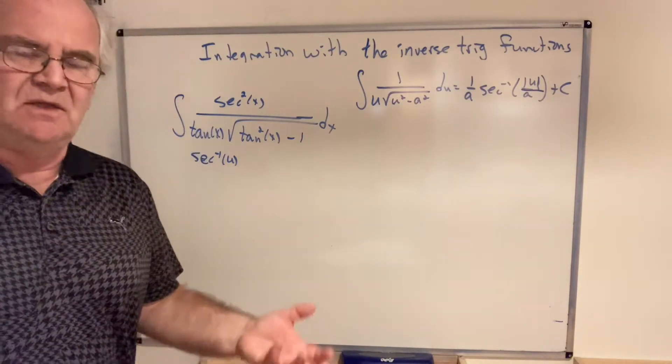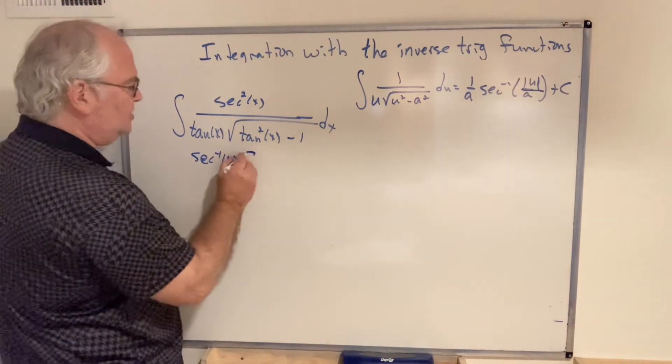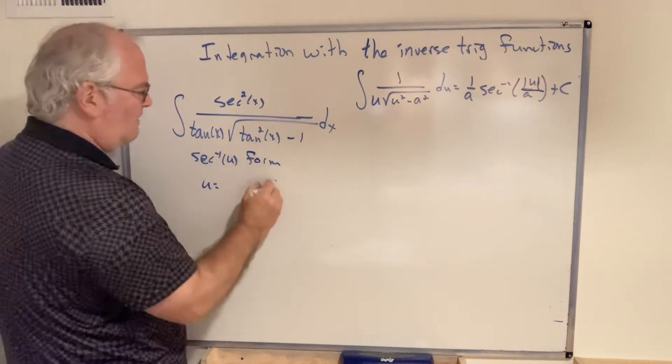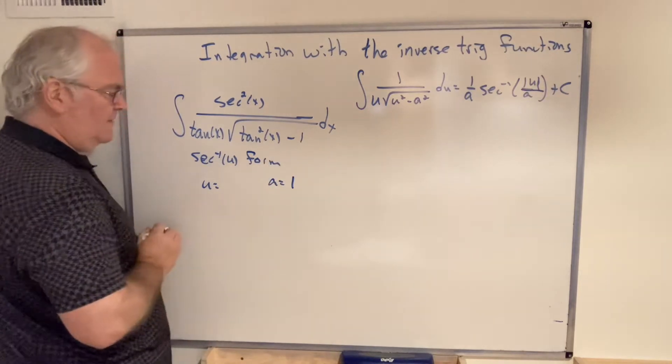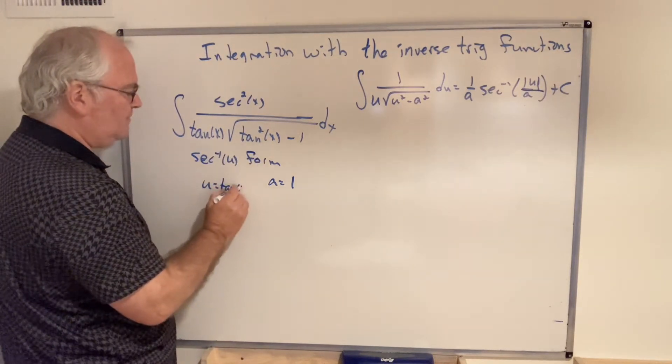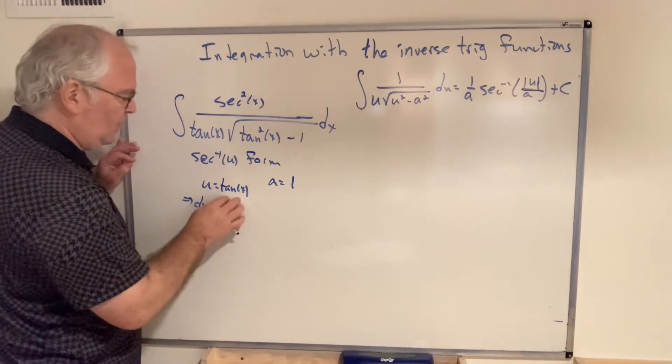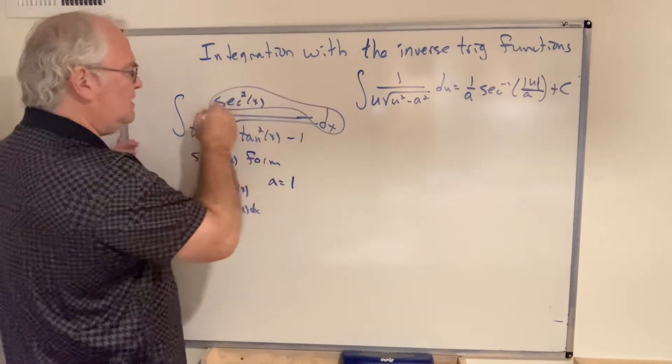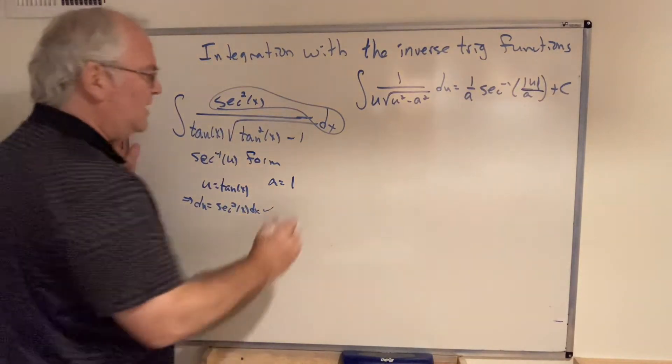I'm not going to ask you something that requires a calc 2 technique. And so this is the secant inverse form. We have to account for u and we need to account for a. Well in this case, the constant that's getting squared is just 1. u, the variable expression getting squared, is tan(x). And this implies the differential line. Well the derivative of tangent is secant squared, and that is precisely what we wanted it to be. The substitution is exact.